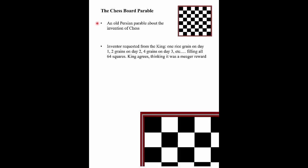There's an old Persian parable I like to use to demonstrate this — a parable about the invention of chess. The story goes that one of the king's servants in Persia invented the game of chess, and the king enjoyed it so much that he asked the inventor what reward he would like. The inventor said, 'I don't really want much. I just want one grain of rice on the first day, two grains of rice on the second day, four grains of rice on the third day.'